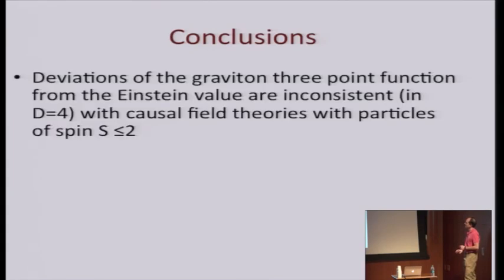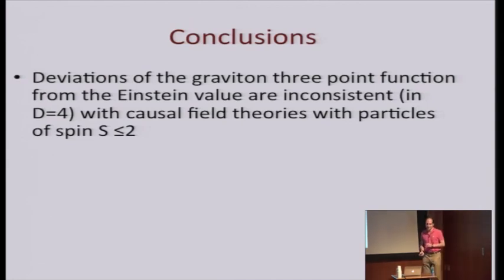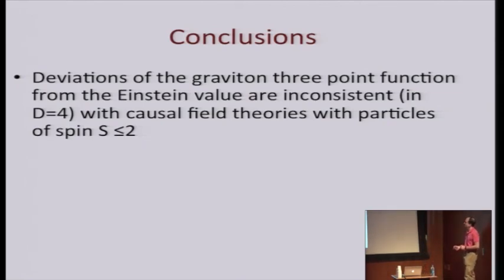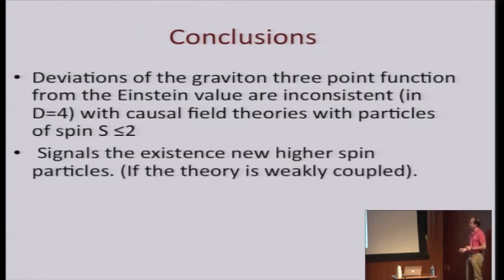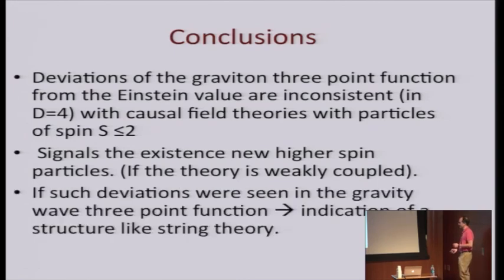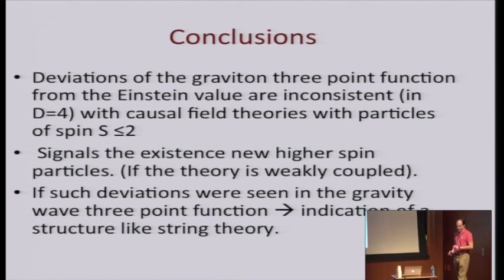In conclusion, deviations of the graviton three-point function from the Einstein theory are inconsistent with causal field theories with particles of spin less than or equal to two in four dimensions, and signal the existence of new higher-spin particles if the theory is weakly coupled. In the case of the gravitational wave three-point function in inflation, the theory is definitely weakly coupled, and if such a signal were seen, it would be an indication of structures like those in string theory. Thank you.